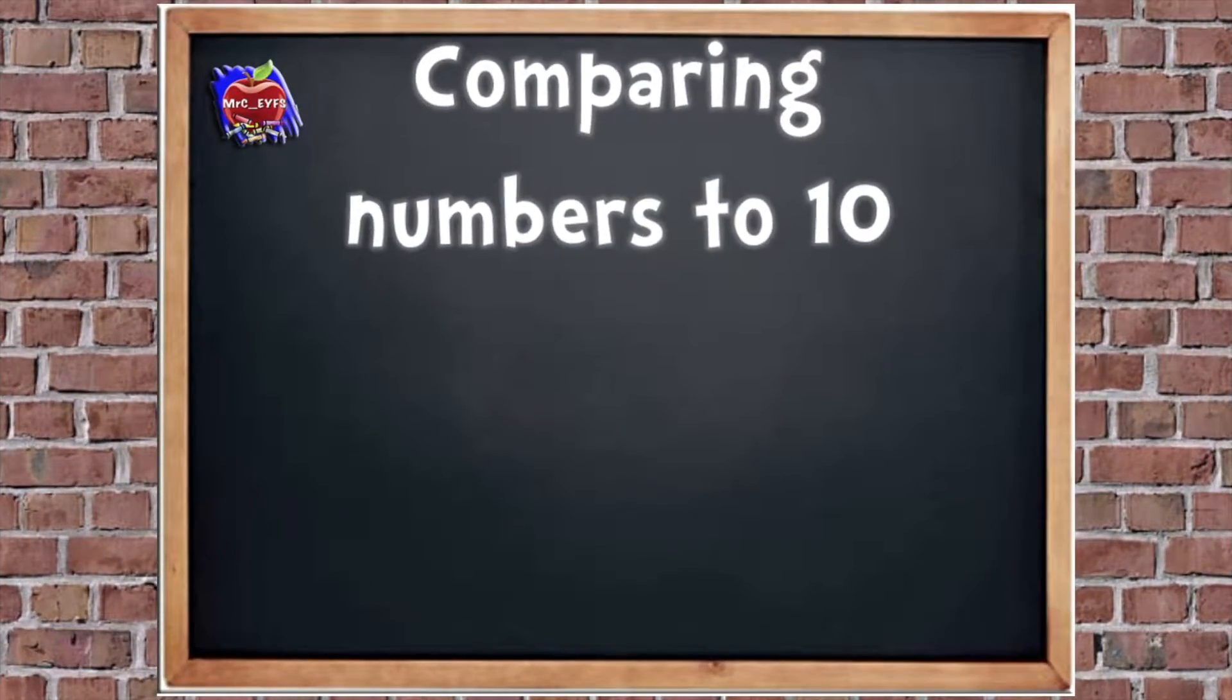Here we go with comparing numbers to 10. In the last session, we looked at subitising. Can you remember what that means? Yeah, it's recognising the patterns without counting. So today, we're going to have a practice using some dice. I'm going to give you a couple of seconds, but not long enough to count the spots. So are you ready?